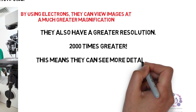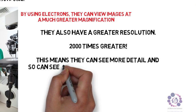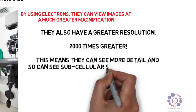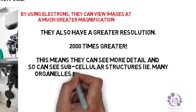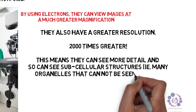By seeing things in more detail, you can also see sub-cellular structures, i.e., many organelles which you wouldn't be able to see under a light microscope due to its limited magnification.